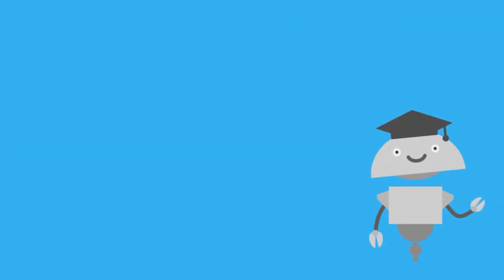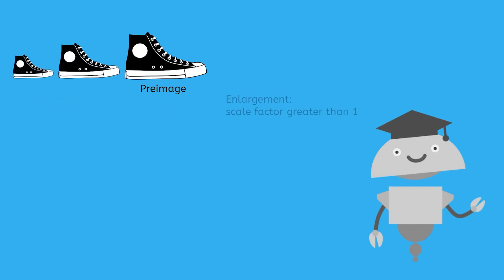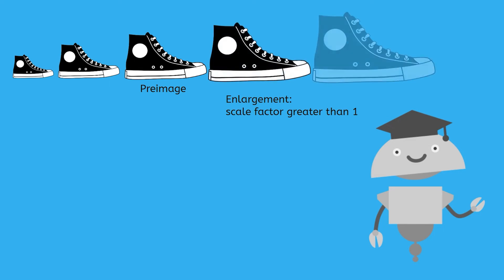Now you can perform dilations with and without a coordinate plane. Remember that reductions make the image smaller than the pre-image, and enlargements make the image bigger than the pre-image.